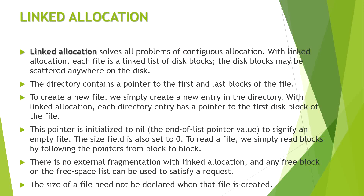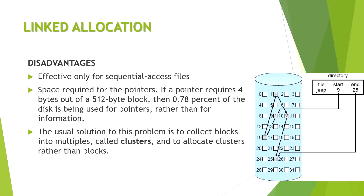In linked allocation, the first content is stored at the head and the next content's file address location is stored in that same block as a pointer. For example, starting at block 9, if the next content is at position 13, a pointer directs to 13, then to 16. Different contents are stored at different locations, and each previous block tells us where the next content is stored.